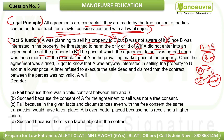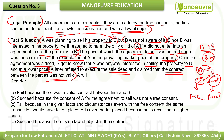The price agreed upon in the agreement was much more than A's expectation and the prevailing market price. Once the agreement was signed, B got to know that A was anyway interested in selling the property to B, but at a lower price. Later, A refused to execute the sale deed, claiming the contract between the parties was not valid. Looking at the principle, it's clear that free consent is completely absent — so the agreement cannot be a valid contract.